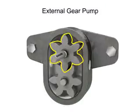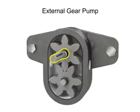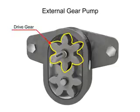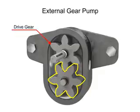One gear is driven by a motor connected to a shaft. This is called the drive gear because it is driven by a motor, and it in turn meshes with and drives the movement of the second gear.